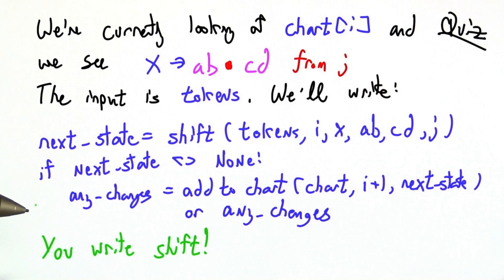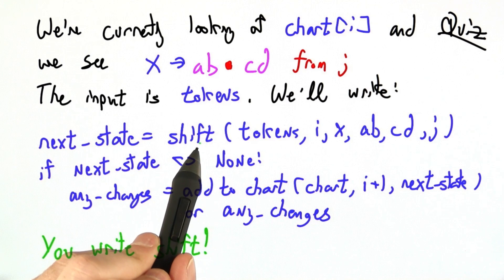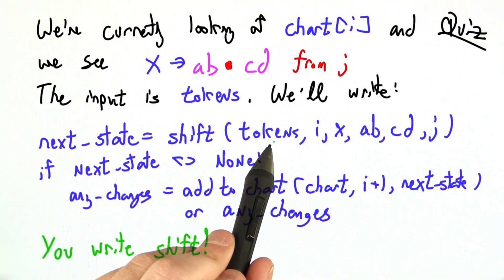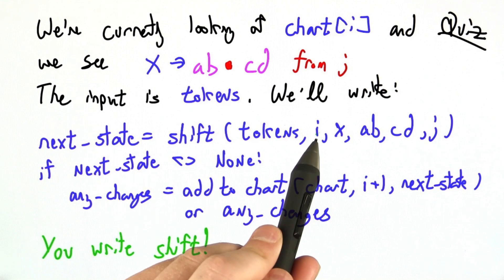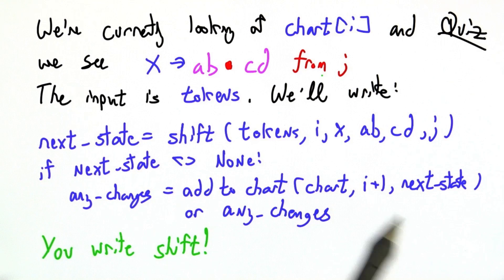So I'm going to have the following code in our parser framework. We're going to figure out if there's a candidate next state by calling a special procedure shift, and shift gets to see the tokens, the entire input, which token we're on, also which chart state we're on, x, ab, c, d, and j, the current state we're considering.